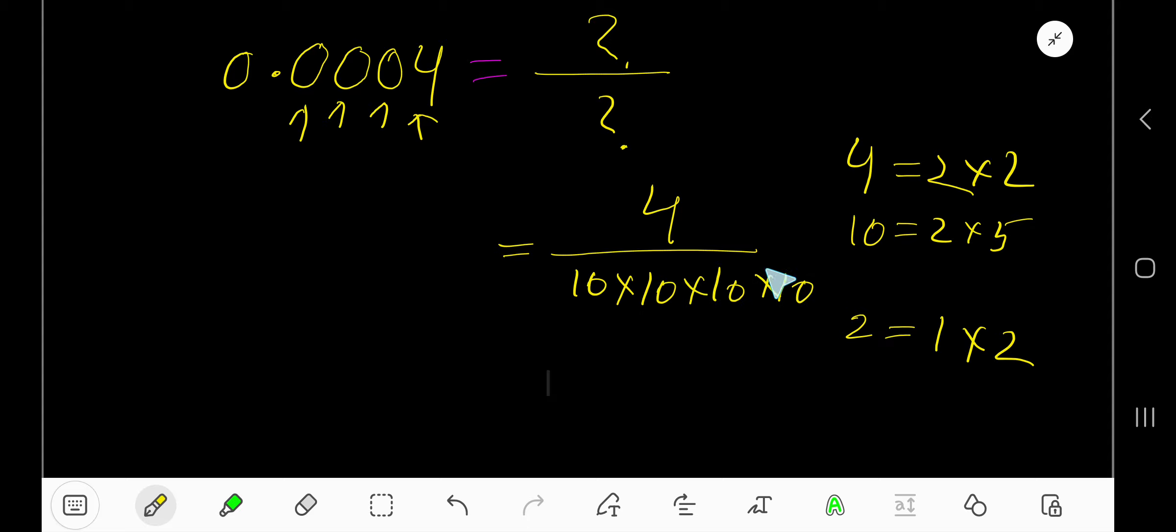Now you need to reduce this fraction by finding the common factor between numerator and denominator. We can target this 4 and 10. We can rewrite 4 as 2 times 2, and we can rewrite 10 as 2 times 5, so 2 is the common factor.